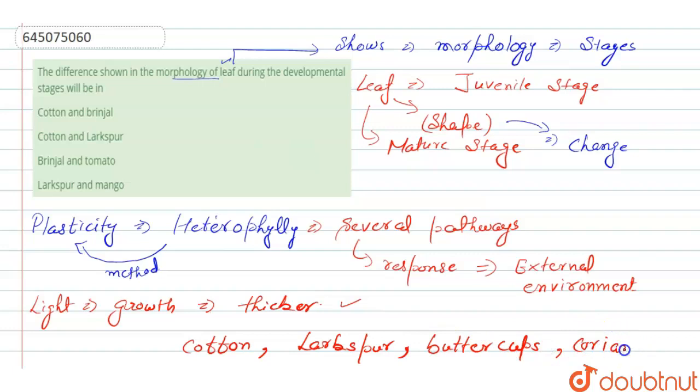The given options are: first, cotton and brinjal, which is wrong because brinjal is incorrect. Next is cotton and larkspur - this is the correct option. Next is brinjal and tomato, which is incorrect as it's not an example of heterophylly plasticity. After that, larkspur and mango is also incorrect. So the right answer is option number two.